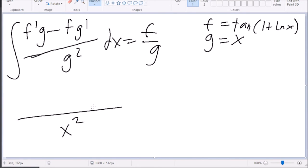x squared, f prime, this is secant squared of 1 plus ln of x, times over x. g is x, so this cancels out, and then minus tangent of 1 plus ln of x, and then the derivative of x is just 1.